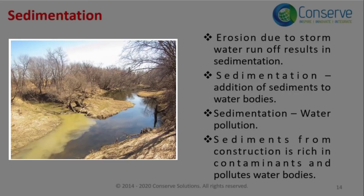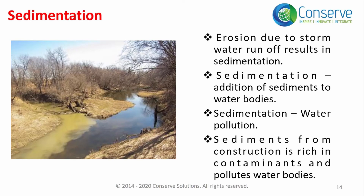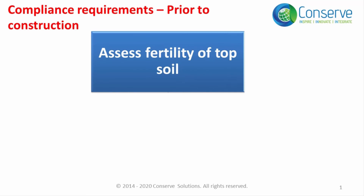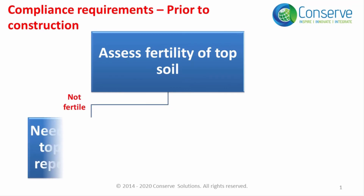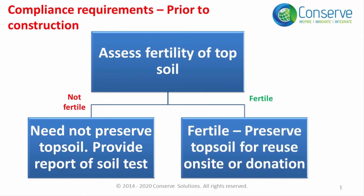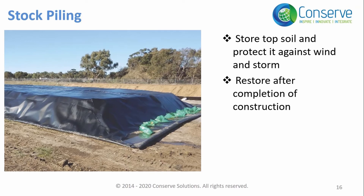The picture clearly shows how a water body is polluted with incoming stormwater runoff. Sediments from construction sites are rich in contaminants and create a larger extent of water pollution. The first step in compliance is to assess the fertility of the topsoil, which is the layer of soil within 10 to 20 cm from ground level. If the topsoil is not fertile, submit a report justifying that there is no need to preserve it. If it is fertile, preserve the topsoil to reuse on site or donate it. Topsoil is generally preserved by stockpiling — storing it in a location unaffected by construction and protecting it against wind and storm — after which it can be reused or donated.